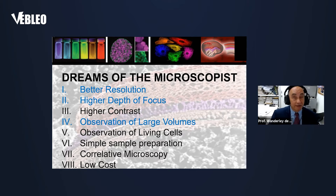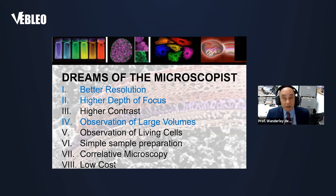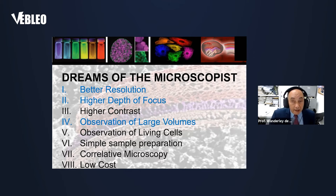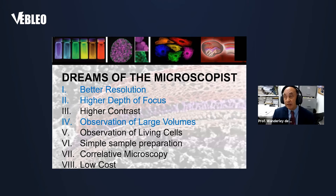All microscopists have some dreams, and I include here the most important ones. One is better resolution — if I want to see details and nanostructures, I need equipment with good resolution. We also need a high depth of focus, because if a nanostructure is part of a more complex organization, I need to see it in the perspective of three-dimensionality.